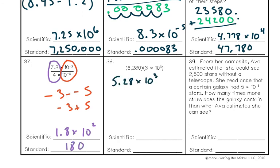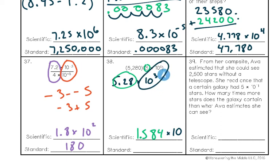Number thirty-eight: first rewrite the number in scientific notation as 5.28 times 10 to the third. Then multiply the number parts: 3 times 5.28 equals 15.84. Since the first number must be between one and ten, move the decimal back one place to get 1.584 — that adds one more factor of 10 to the exponent. Using the product rule, 10 to the sixth times 10 to the third times 10 to the one is 10 to the tenth. Final answer: 1.584 times 10 to the tenth.